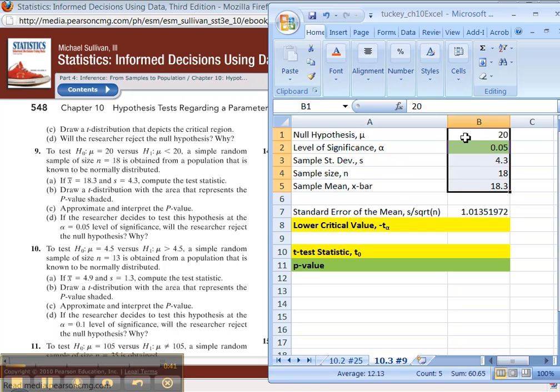Mu is 20. In the hypotheses alpha is 0.05. By the way I'm doing problem number 9 in case you missed that. Then standard deviation was sample standard deviation which is 4.3. n is 18, x-bar was 18.3.